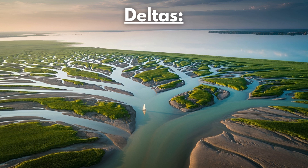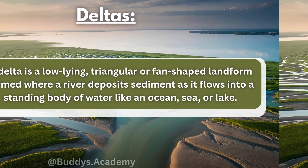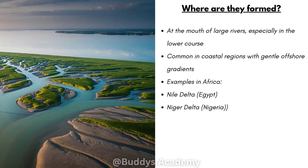Now let's take a quick look at deltas. So what is a delta? A delta is a low-lying triangular or fan-shaped landform formed where a river deposits sediment as it flows into a standing body of water like an ocean, sea or lake.